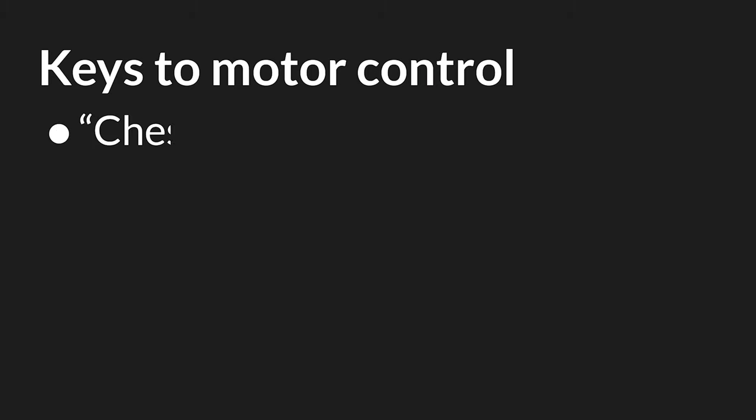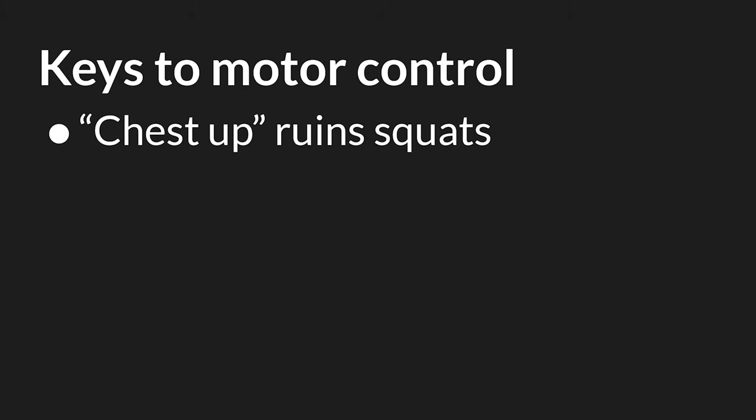Our fourth test will be a bit of a change of pace — instead of testing a single joint, we'll now test how all those joints work together. Motor control is by far the most common cause of butt wink, but this is good news: it means you can fix butt wink instantly with just a few cues. The cue of keeping your chest up throughout the squat or deadlift is perhaps the most overused, unhelpful cue in any lift.